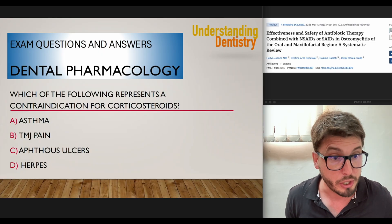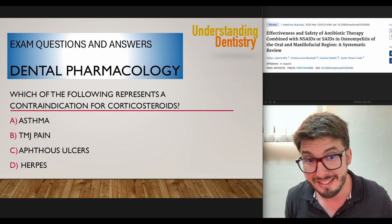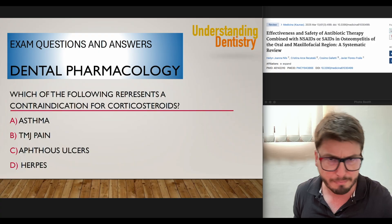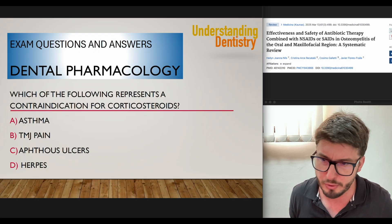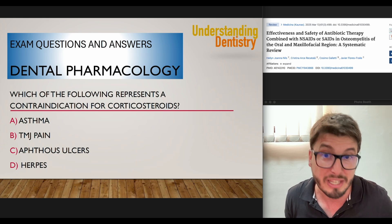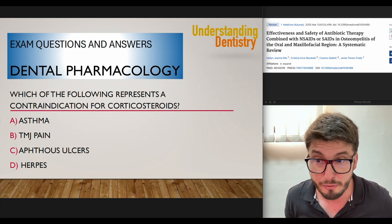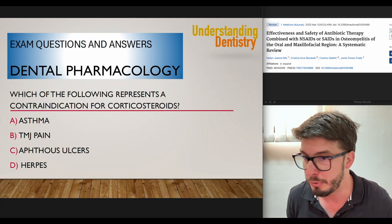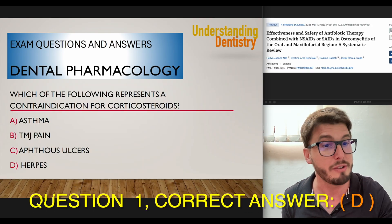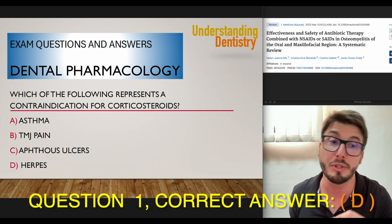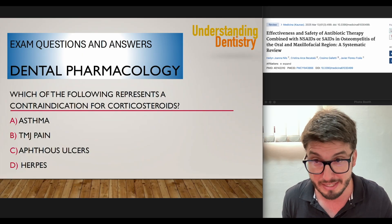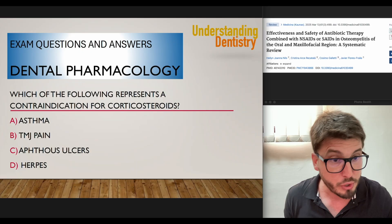Then we have aphthous ulcer. Aphthous ulcers can be treated with steroids — you can take systemic steroids or even topical steroids for the mucosa. You can also treat the symptoms with those steroid creams. So steroids are an indication for aphthous ulcers as well. The correct answer — the contraindication — is infections: fungal infections, viral infections, or bacterial infections. That's why the correct answer is letter D — herpes. This is the contraindication.